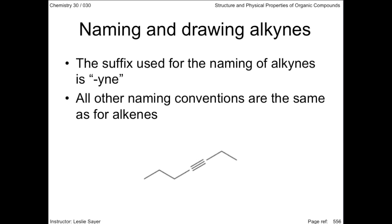Carbons 2, 3, 4, and 5 here have a linear configuration. Recall from VSEPR theory in Chemistry 20 or Chemistry 30 prep that a central atom with two electron groupings has a linear structure.